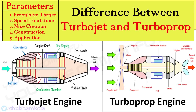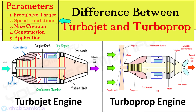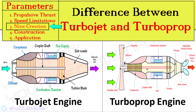The turbojet engine has 100 percent propulsive thrust from the jet exhaust, whereas the turboprop has 80 to 90 percent of propulsive thrust from the propeller and 10 to 20 percent from exhaust gases. There is no speed limit for turbojet engines because there is no propeller, whereas in turboprop engines the speed limit is determined by the propeller RPM.